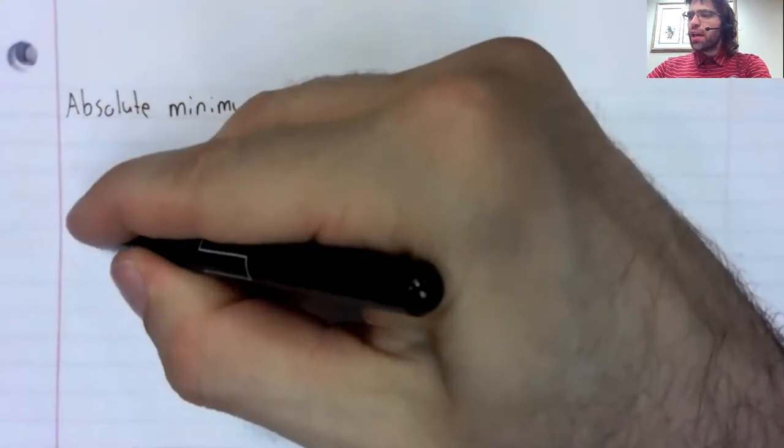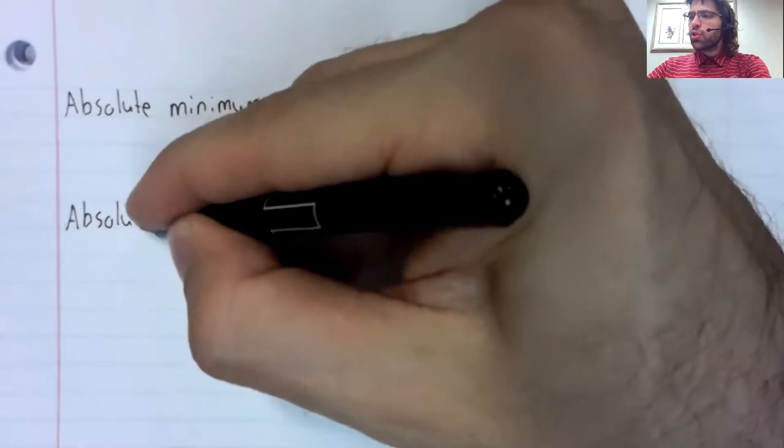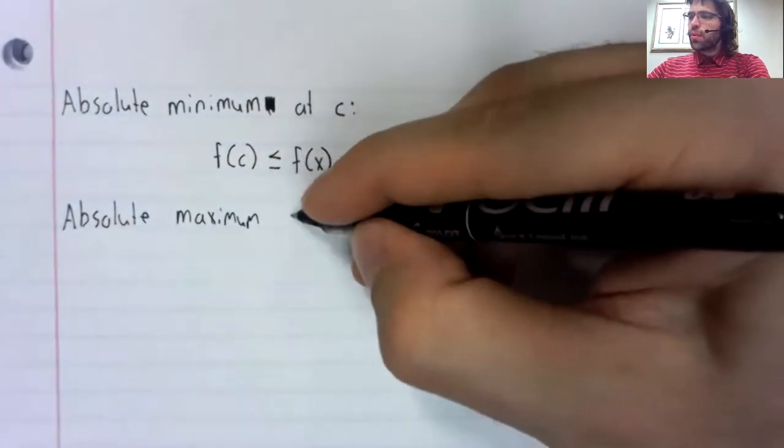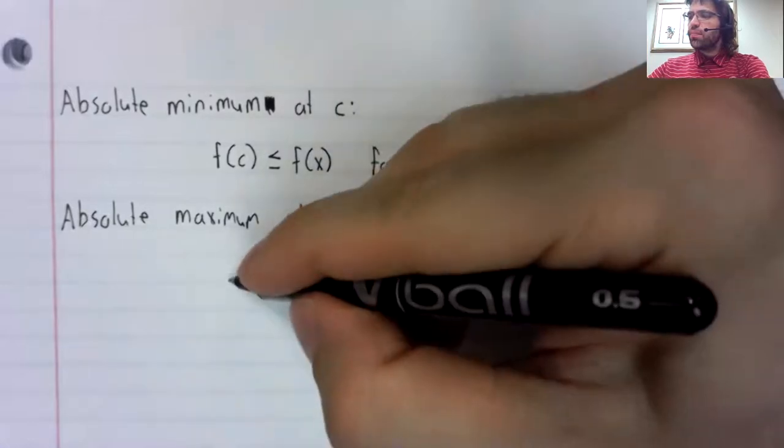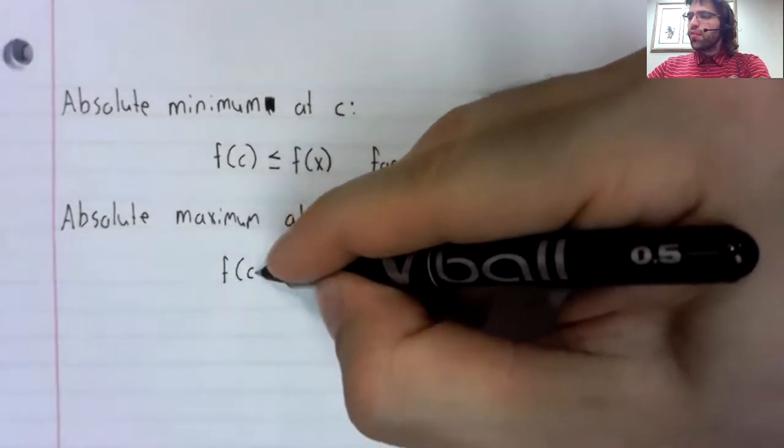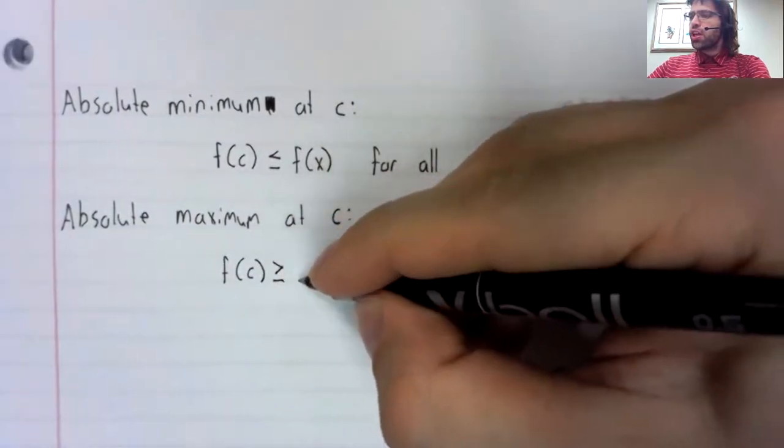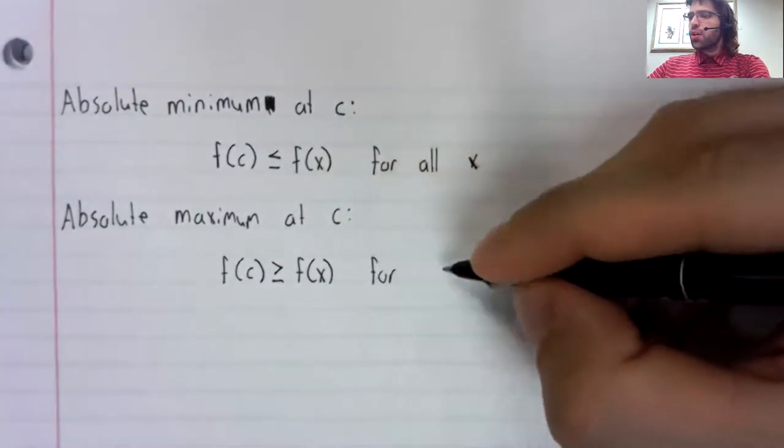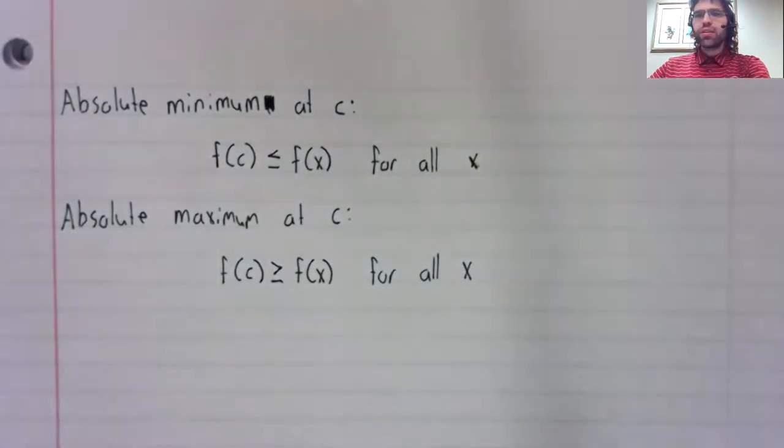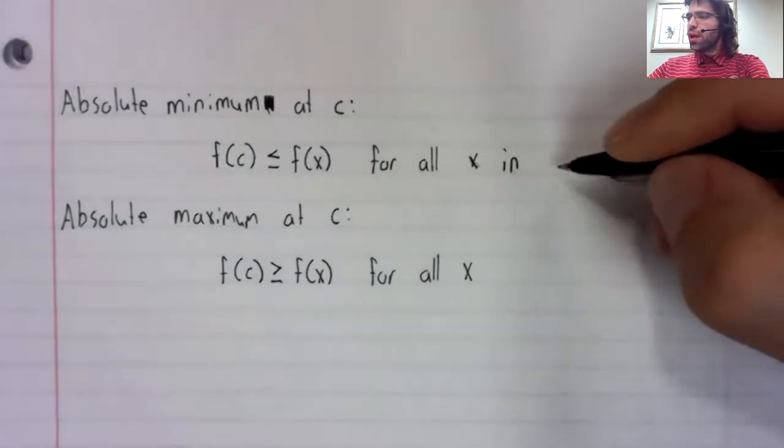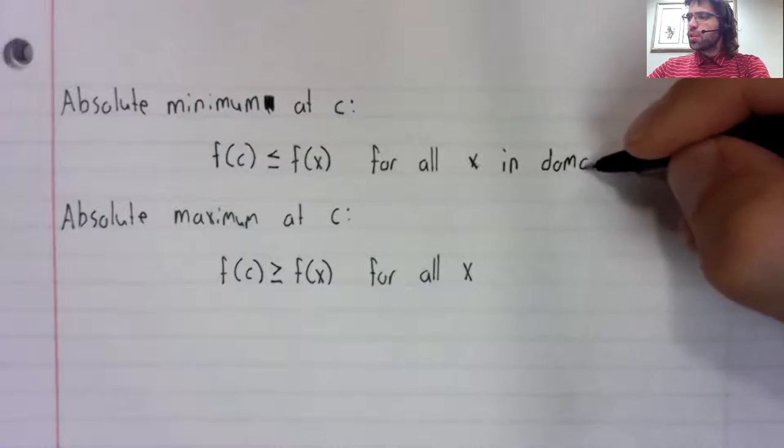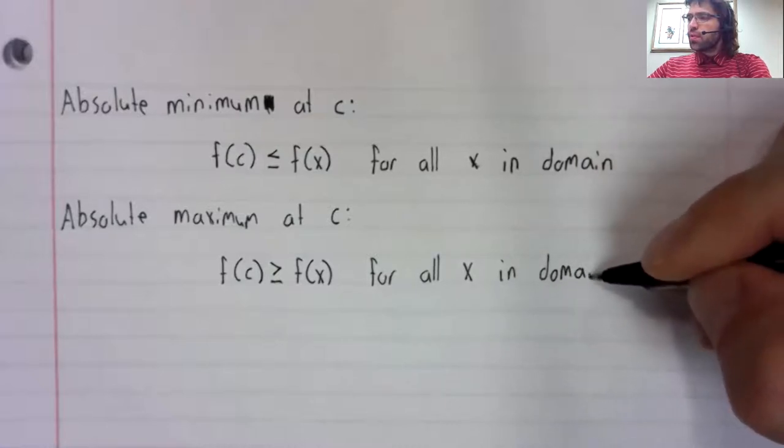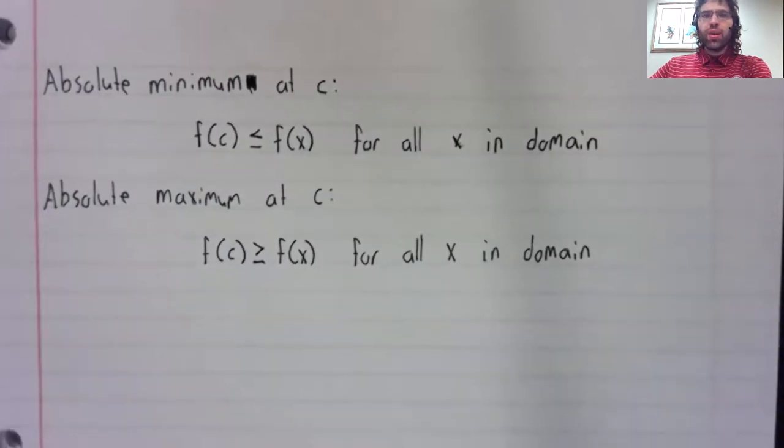And we have an absolute maximum at c if f of c is greater than or equal to f of x for all x. And when I say all x, I of course mean all x in the domain of the function.